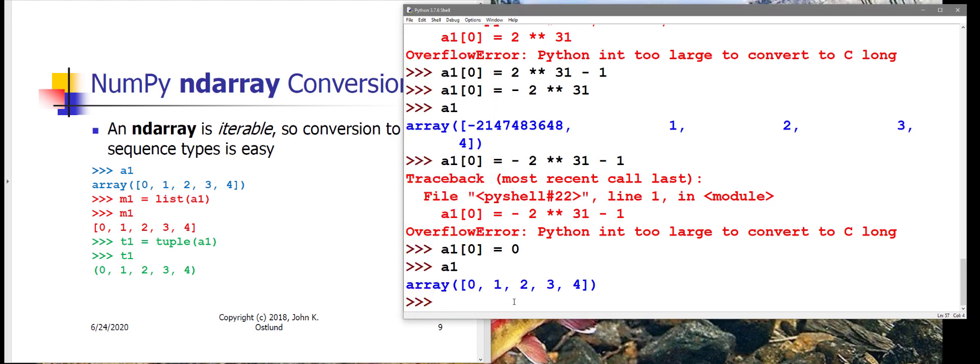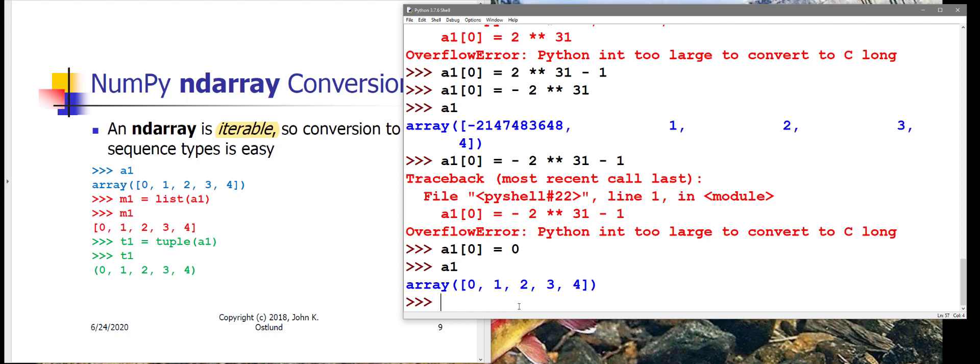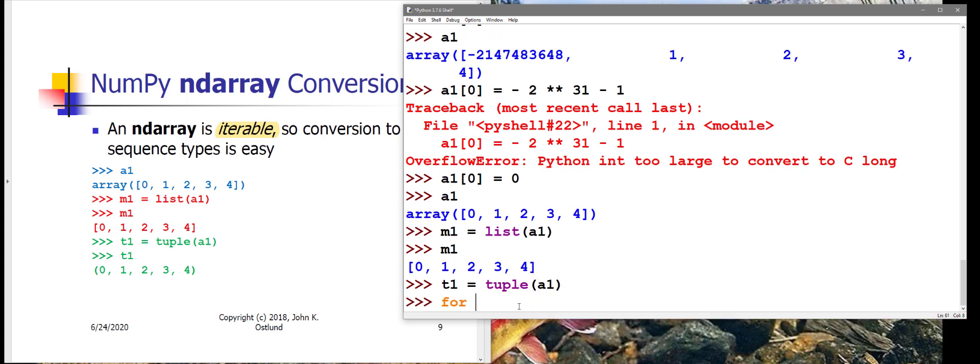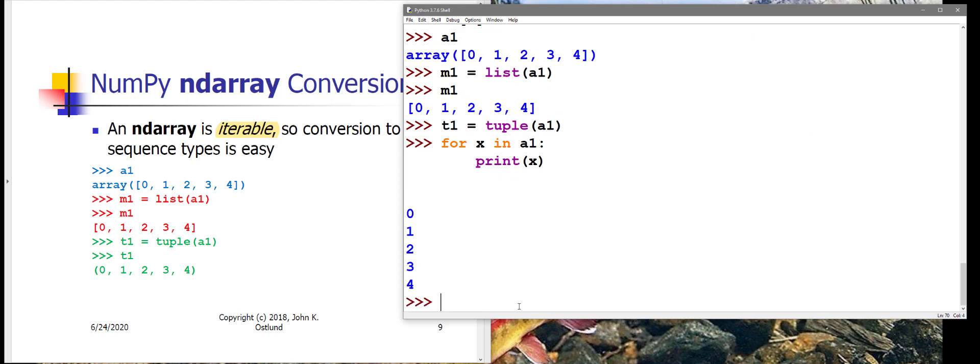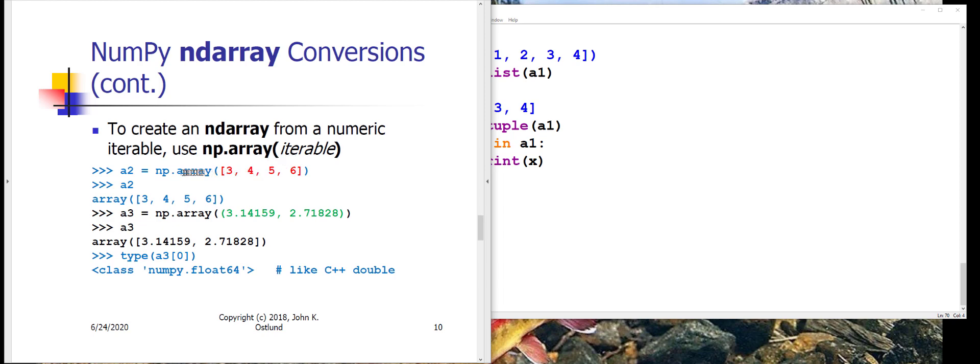An ndarray is iterable, and so it can be used in all of the contexts where we can use iterables. I can create a list from the ndarray, I can create a tuple from the ndarray, I can loop through the ndarray, and so forth. Any of the various contexts where I have used a list or a tuple or a set or a string as an iterable, I can also use an ndarray as an iterable.